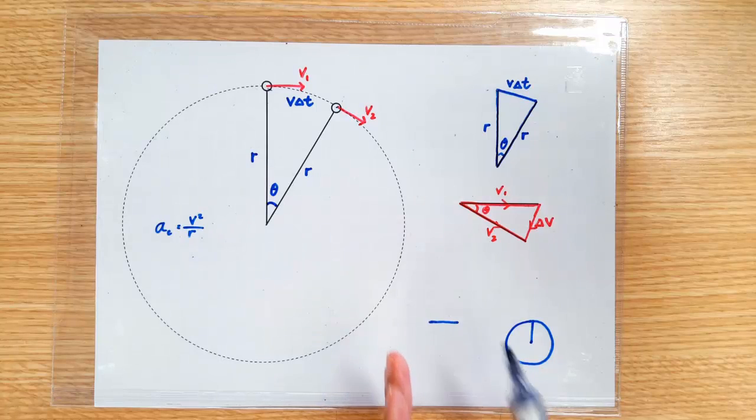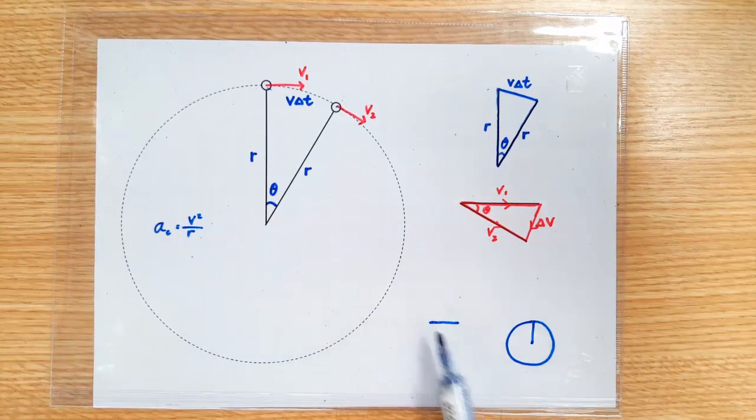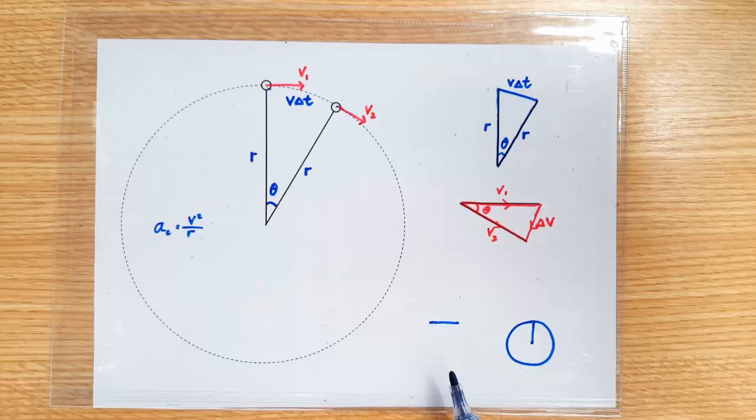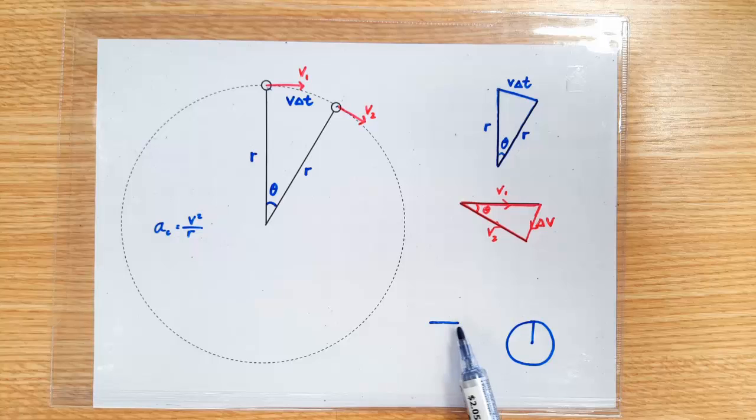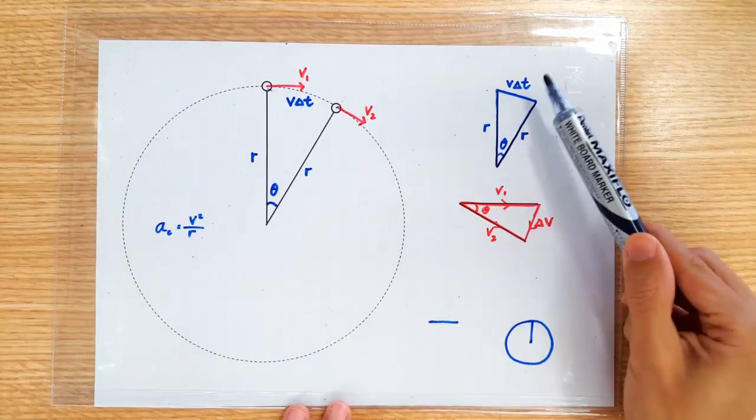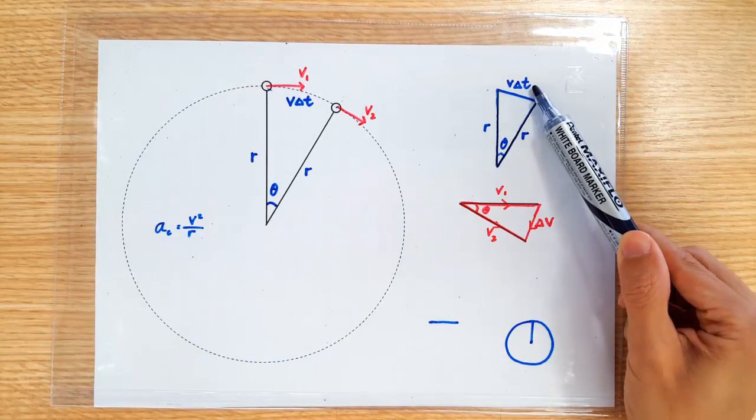For example, you go to the swimming pool, you look at the water surface. Is it a straight line? Yeah, it looks straight, but you know that it can't be a straight line because the earth is round. So, that straight line that you thought was a straight line is actually part of an arc. So, we're really making a very valid approximation here.